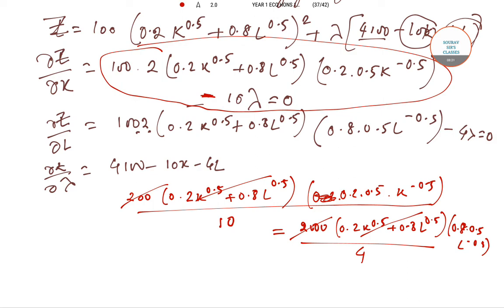Now we have 0.1/10 times K^(-0.5) equals 0.4 times L^(-0.5) divided by 4. You have a direct relationship here.